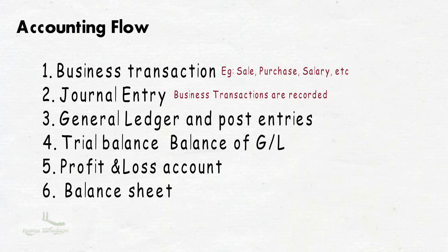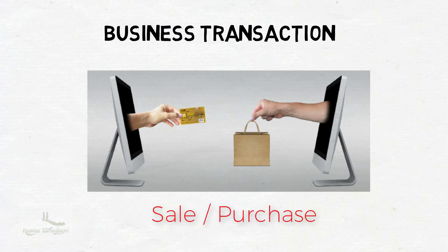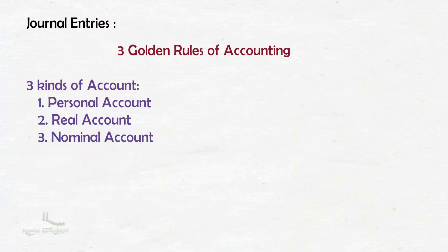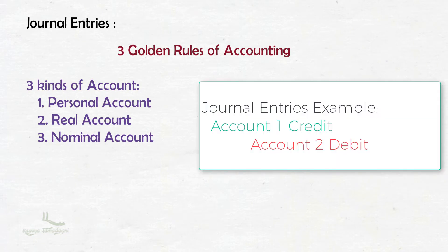As you know already, in the accounting flow, first is the business transaction. A business transaction can be any sale or purchase activity performed in a business — any transaction where money is involved. After the business transaction, the main accounting starts from creating journal entries. For creating journal entries, it requires some rules, named as the three golden rules of accounting standards.